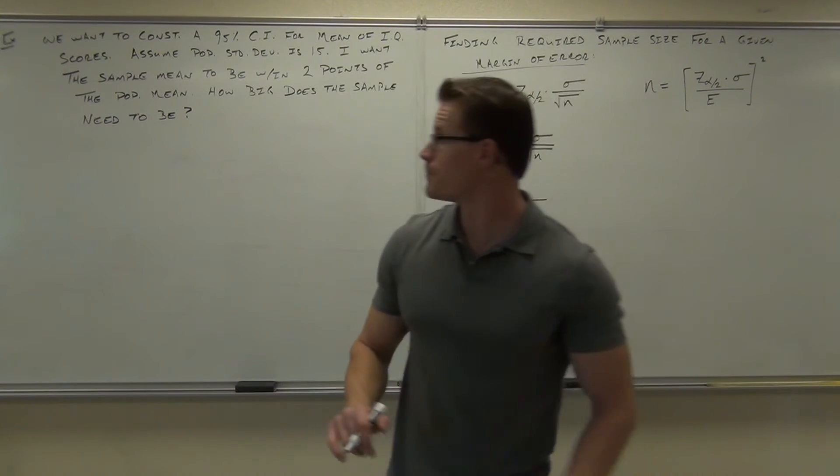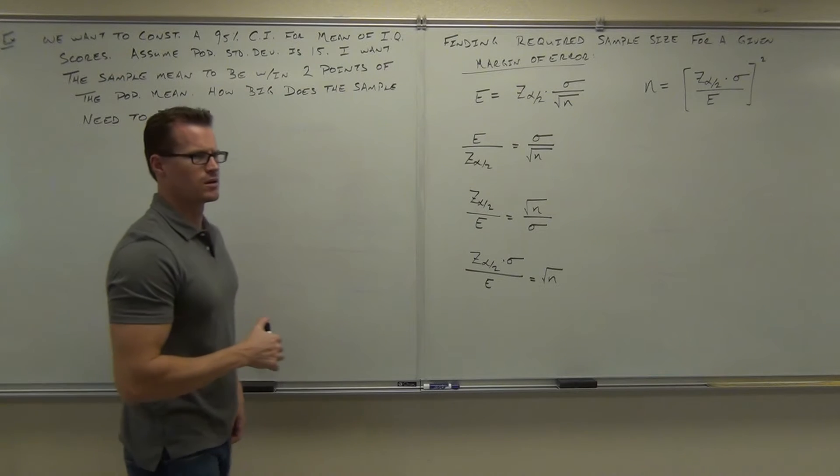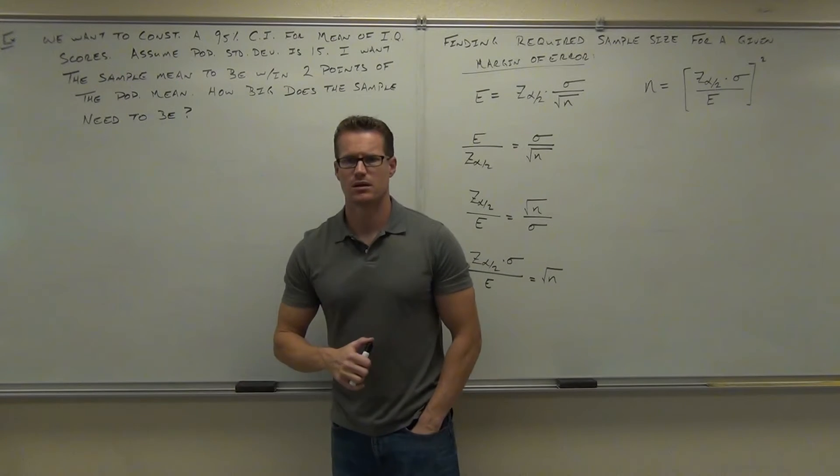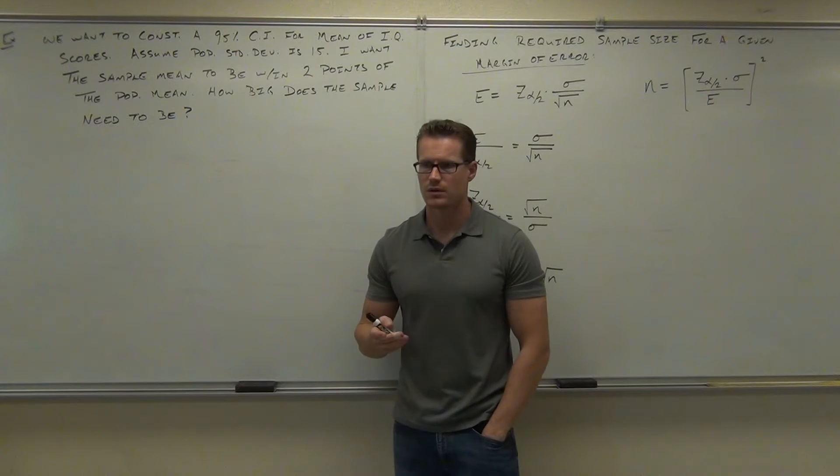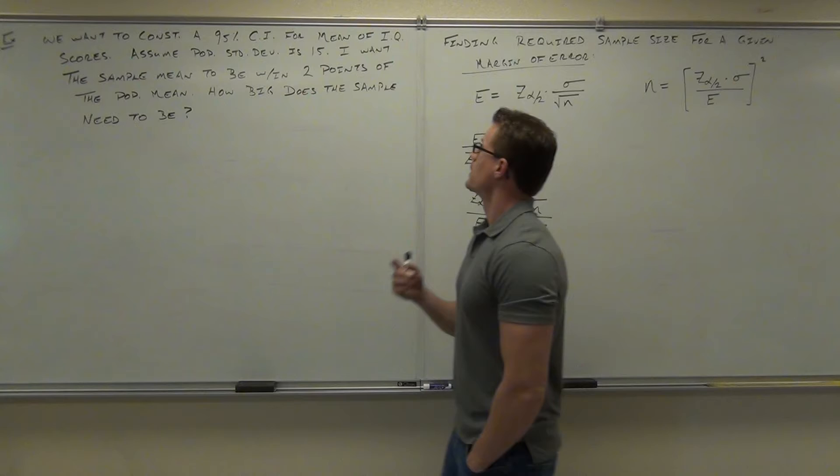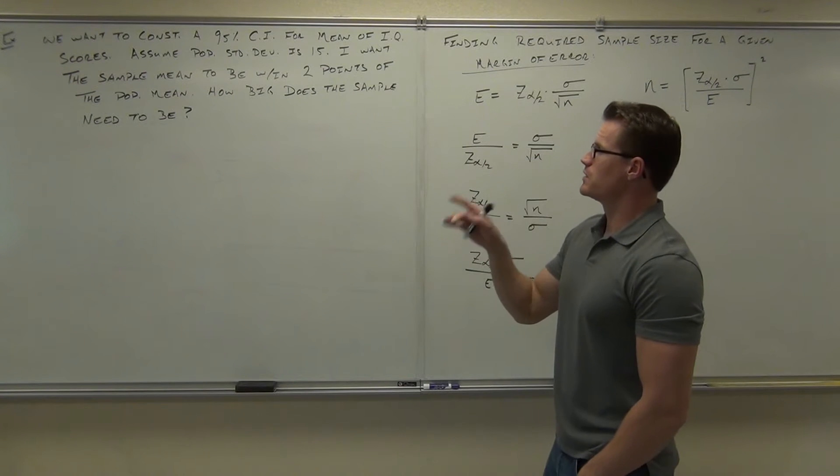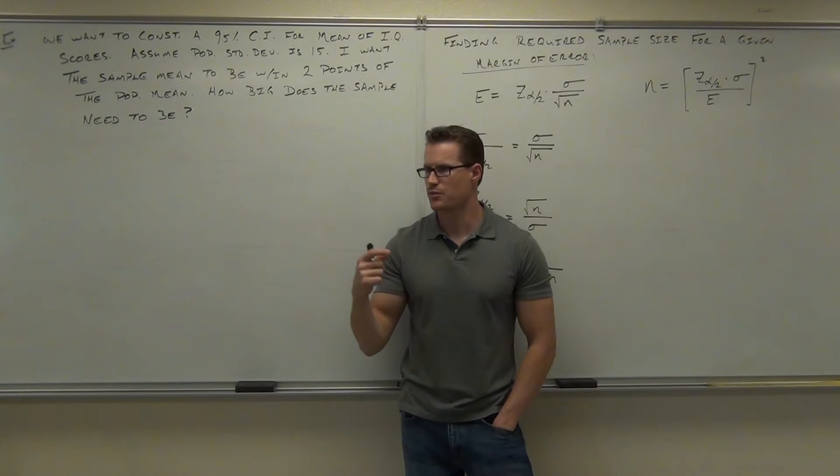Then we'll do the math and figure this thing out. Firstly, we want to construct it. What do we want to construct? What type of confidence interval? 95%. That should tell you something, right? For the mean of IQ scores - that means the population IQ scores. So that means for mu. We're trying to find a confidence interval for mu.